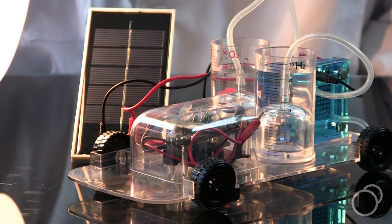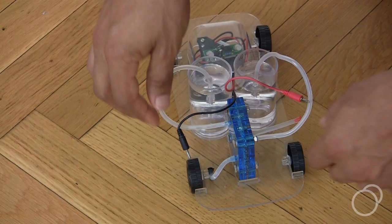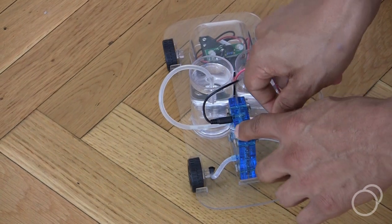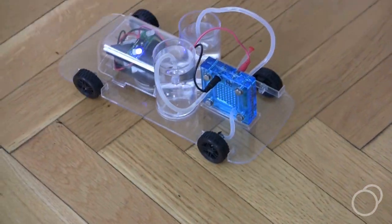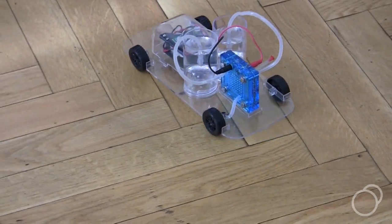Milliliter markings on the fuel tanks allow students to measure how much hydrogen has been produced. Now that the tanks are full, running the car is as simple as disconnecting the power source and attaching the fuel cell to the motor. The fuel cell car will keep running as long as it has hydrogen to power it.